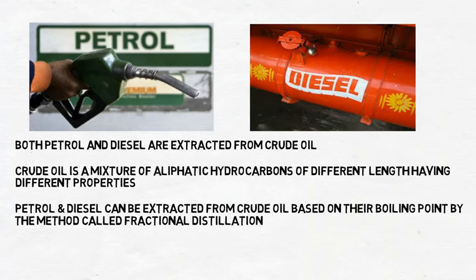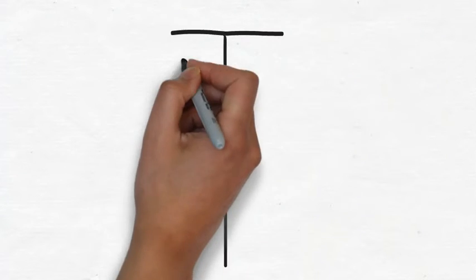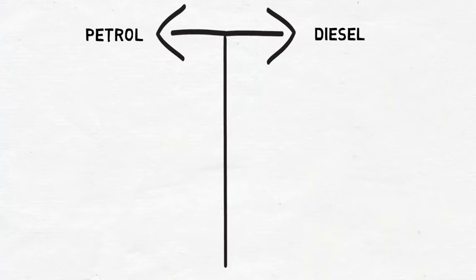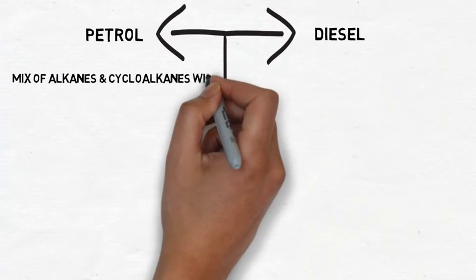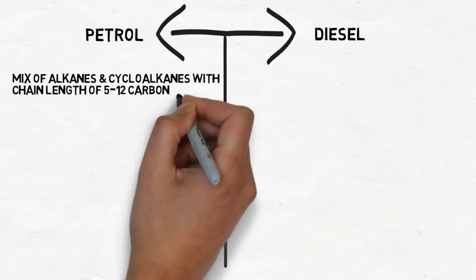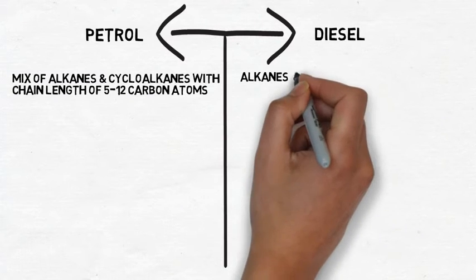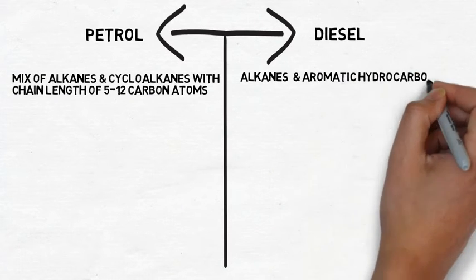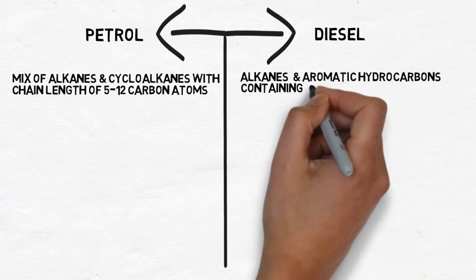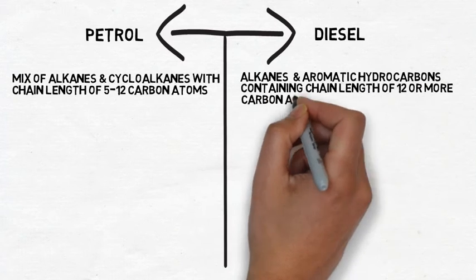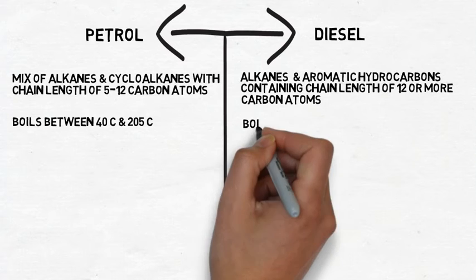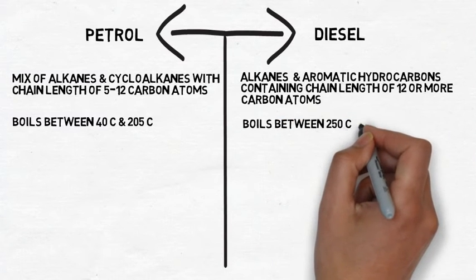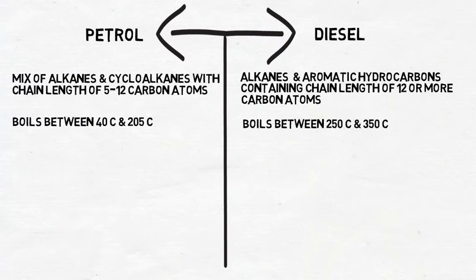Fractional distillation uses the difference in boiling point of petrol and diesel to get them separated. Petrol is a mix of alkanes and cycloalkanes with a chain length of 5 to 12 carbon atoms, while diesel is a mix of alkanes and aromatic hydrocarbons containing chain lengths of 12 or more carbon atoms. Petrol boils between 40 and 205 degrees Celsius, while diesel boils between 250 and 350 degrees Celsius.